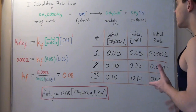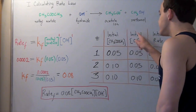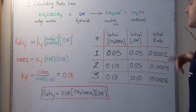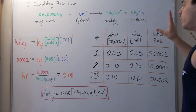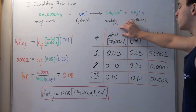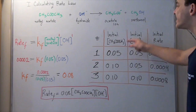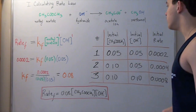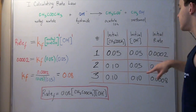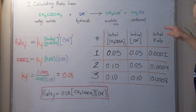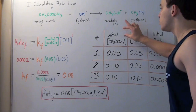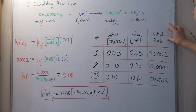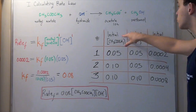Next, our goal is to change one of these and see how our initial rate is influenced. We keep our initial hydroxide concentration the same and only change our initial concentration of methyl acetate — we double it to 0.1 molar. Hydroxide stays at 0.05 molar, and we see that our initial rate also doubles to 0.0004. This means that methyl acetate concentration and initial rate are directly proportional.